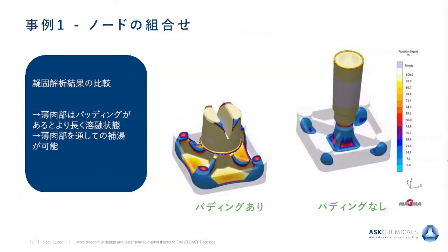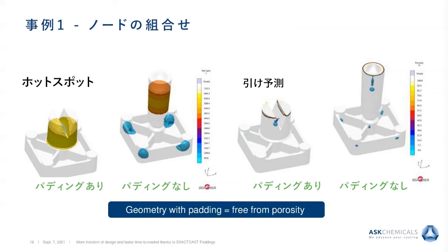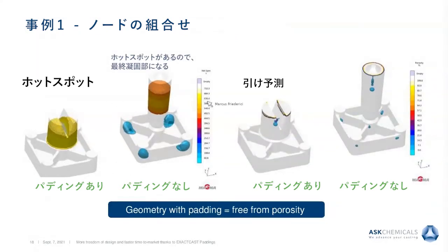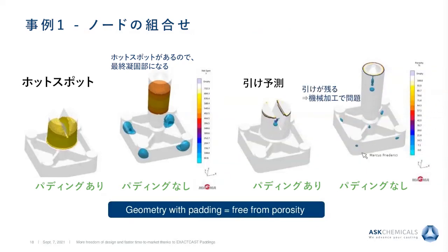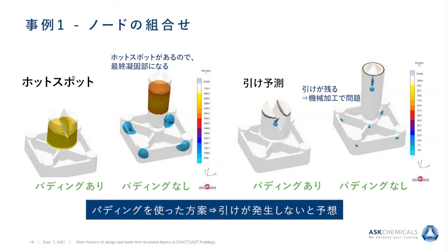Comparing the hot spot and porosity results with and without padding: with the padding, the hot spot is located only in the residual riser. Without the padding, hot spots appear within the casting itself. The porosity behaves the same way — with padding you get a sound casting; without it you have porosity and issues during machining. This was a good first result, achieved in the first design iteration.